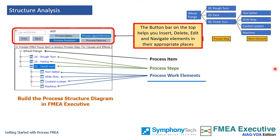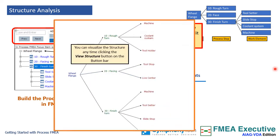The button bar on the top helps you build the tree and navigate through it. A click of the view structure button helps you visualize the structure with its process items, all process steps, and their respective work elements.